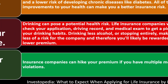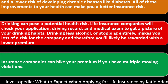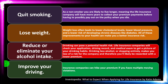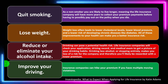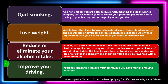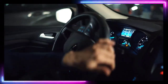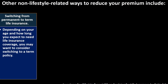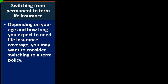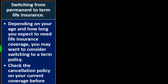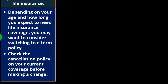Improving your driving is another factor. Insurance companies can hike your premium if you have multiple moving violations. Other non-lifestyle-related ways to reduce your premiums include switching from permanent to term life insurance. Depending on your age and how long you expect to need life insurance coverage, you may want to consider switching to a term policy. Check the cancellation policy on your current coverage before making a change.